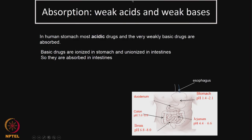We looked at weak acids and weak bases because they are very important. The pH inside the GI region changes tremendously. For example, pH in the stomach is 1.4 to 2.1, then the drug may go to duodenum, then jejunum where the pH is 4.4 to 6.6, and ileum pH is 6.8 to 8, and then colon 5 to 8. So there is large variation in pH from highly acidic to basic. Most acidic drugs and weakly basic drugs are absorbed in the stomach.